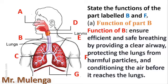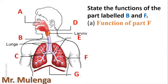This is the main function of the trachea, which is also called the windpipe. What about the part labeled F? This part labeled F is the alveoli.